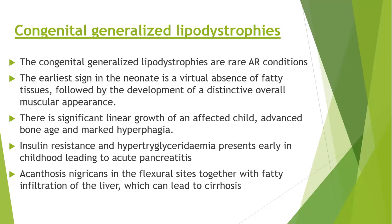Congenital generalized lipodystrophy is a rare autosomal recessive condition. The earliest sign in the neonate is a virtual absence of fatty tissue, followed by development of a distinctive overall muscular appearance. Because of the absence of fat, the muscles become more prominent and the child has a more muscular look. There is significant linear growth of the affected child, advanced bone age, and marked hyperphagia. Insulin resistance and hypertriglyceridemia present early in childhood, leading to acute pancreatitis. Acanthosis nigricans due to insulin resistance is seen in flexural sites, together with fatty infiltration of the liver that may lead to cirrhosis.